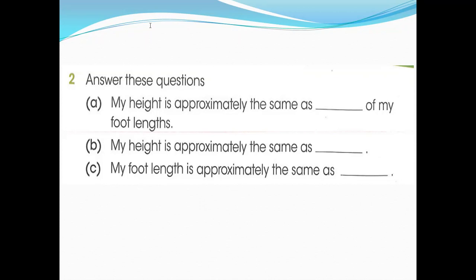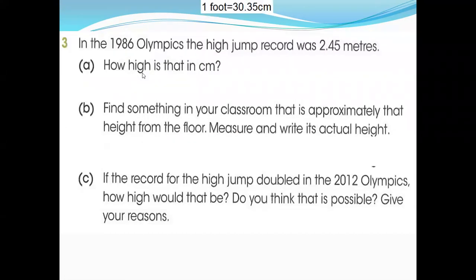Question number three. If you have a centimeter measuring tape, you can measure it. In the 1986 Olympics, the high jump record was 2.45 meters. How high is that in centimeters? Very easy. One meter equals 100 centimeters. So this is 2 point... that's 200 plus 45, which is 245. So you write here 245 centimeters.